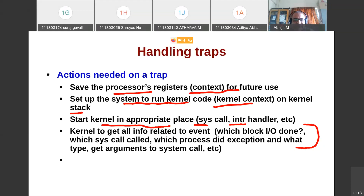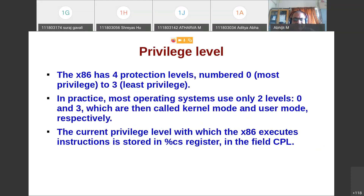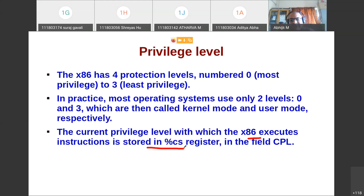The x86 processor has four privilege levels numbered zero to three, but in practice most operating systems use only two: level zero (kernel mode) and level three (user mode). There are two bits in a register to represent these four values. If set to zero, the processor is in kernel mode; if set to one-one (three), it is in user mode. The current privilege level is stored in the CS register in a field called the current privilege level.